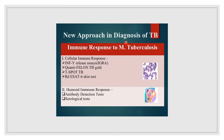New approaches in diagnosing tuberculosis include the interferon gamma release assay (IGRA), which is based on cellular immune response. When blood containing T-lymphocytes comes in contact with mycobacterium antigen, T-lymphocytes release gamma interferon which can be detected. Tests include QuantiFERON TB Gold and T-SPOT TB. Antibody detection or serological tests are banned by WHO and the Indian government, especially in endemic countries like India.